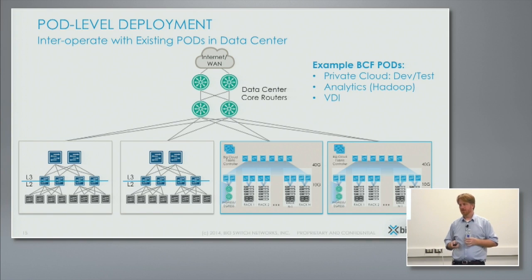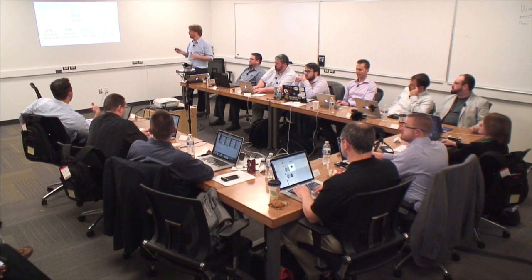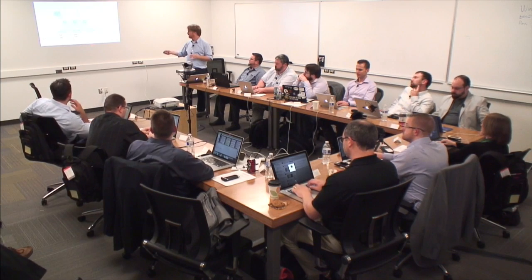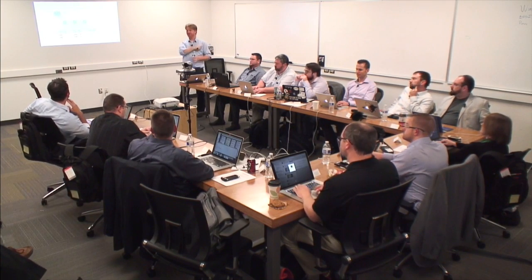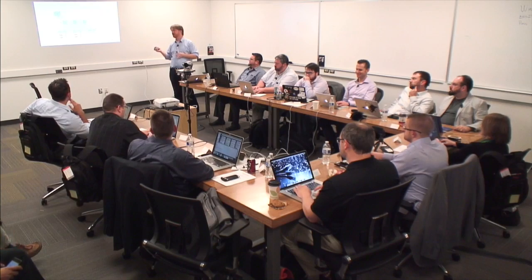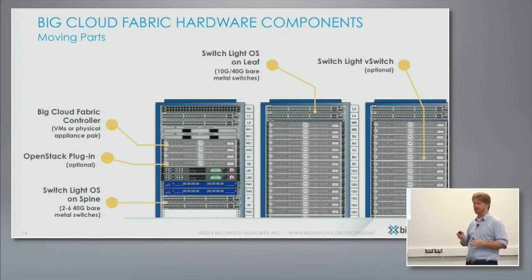Do you dedicate a rack for perimeter integration — border leaves, whatever you want to call them? Yes, as pictured. In practical terms, you don't even need to dedicate a rack from our standpoint; it just makes admins' lives easier. In theory, you could put an external device in each rack. Connectivity to the core can come from any of the leaves. Our recommended design is to have it from a single point, but really just for management sanity — there are no data plane limitations.